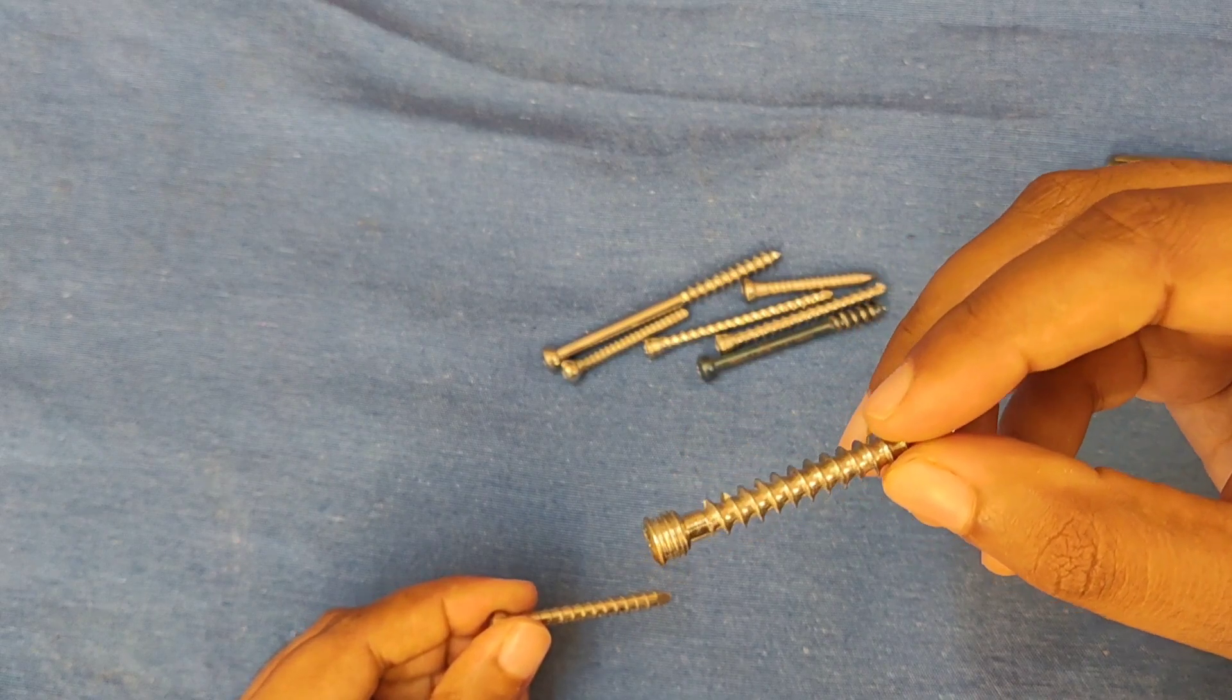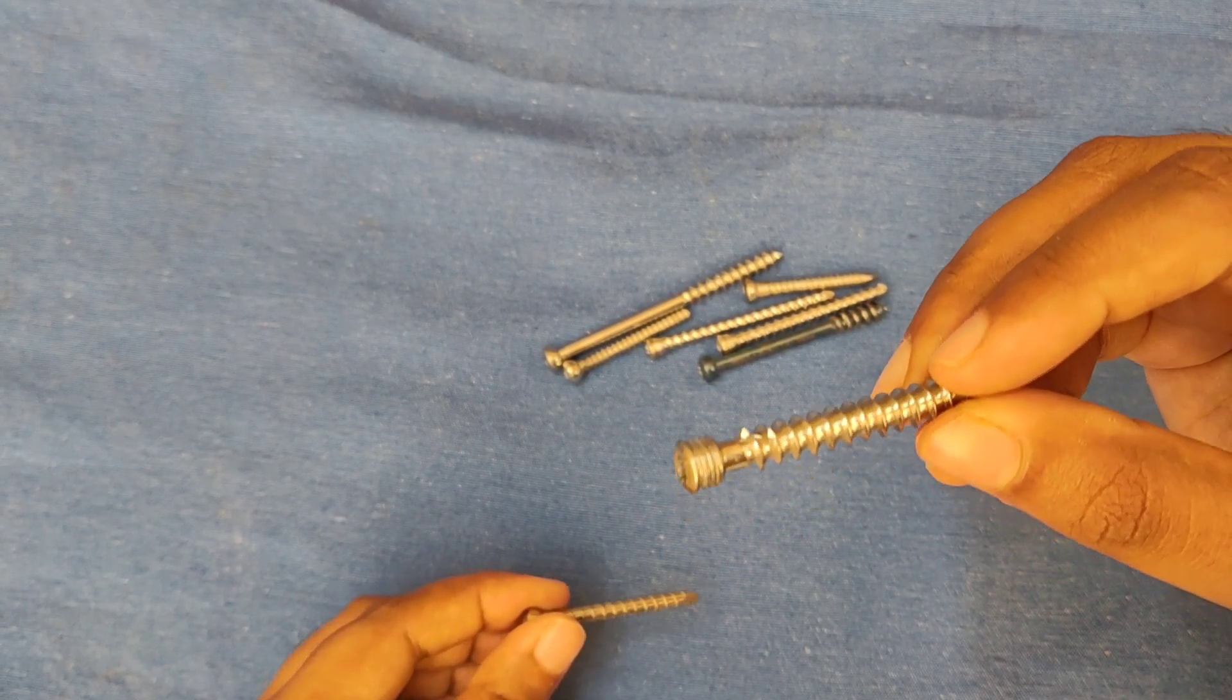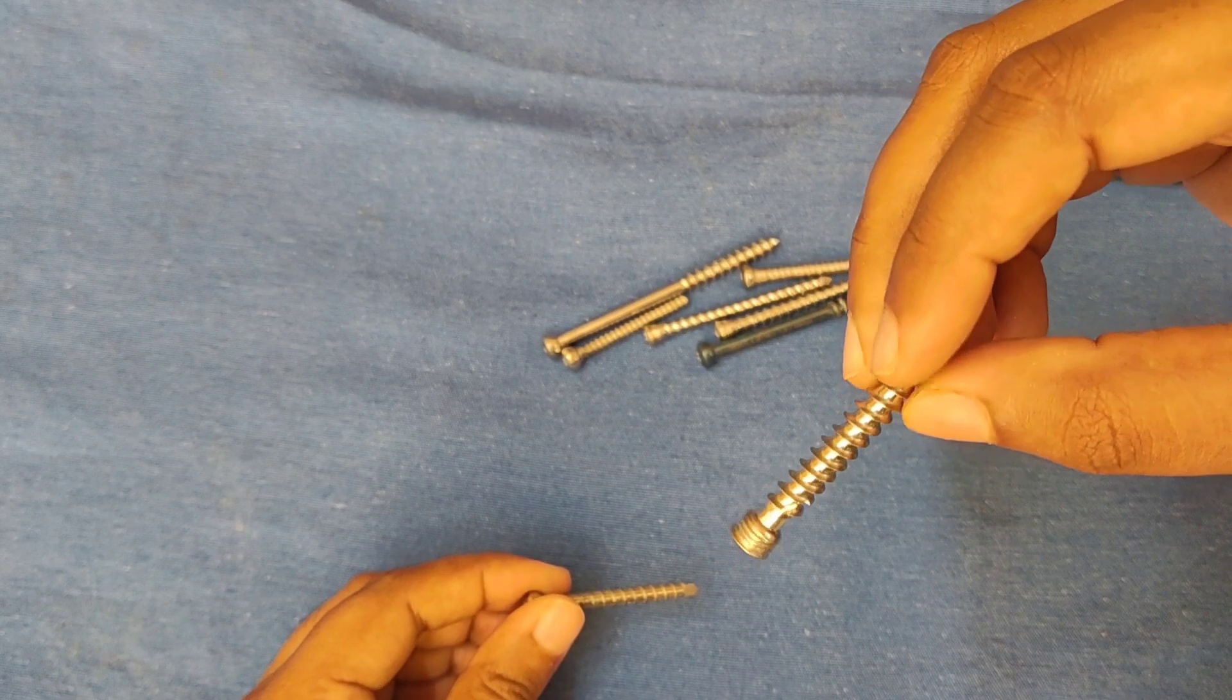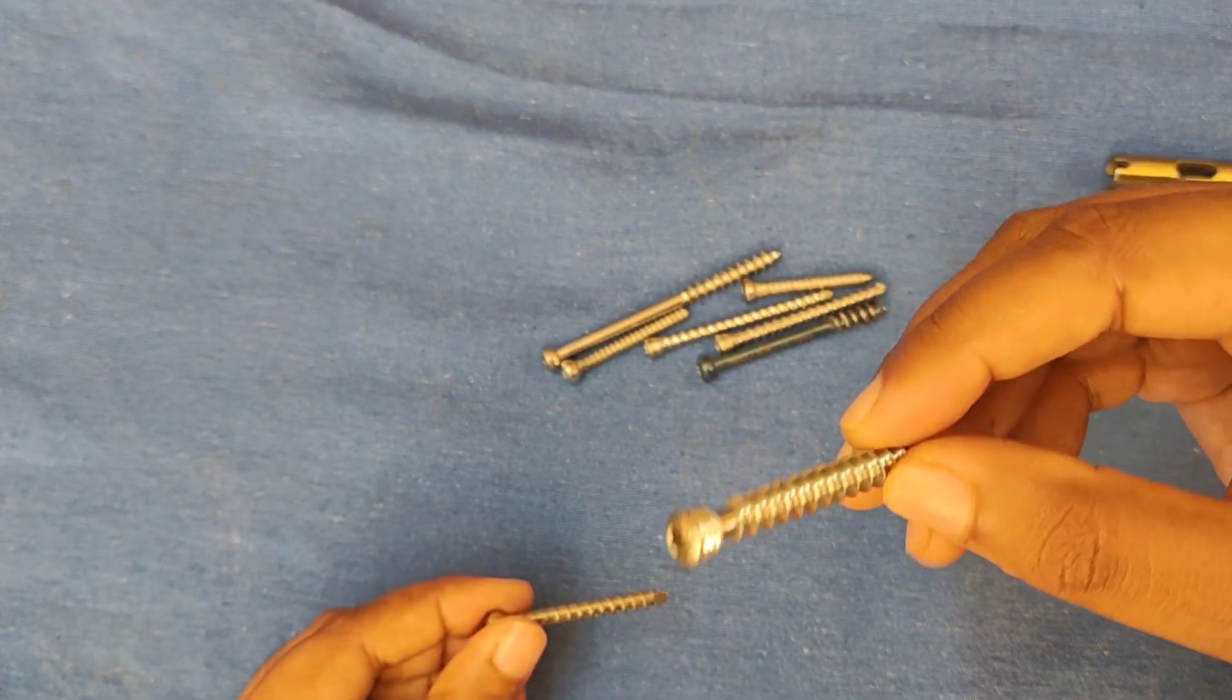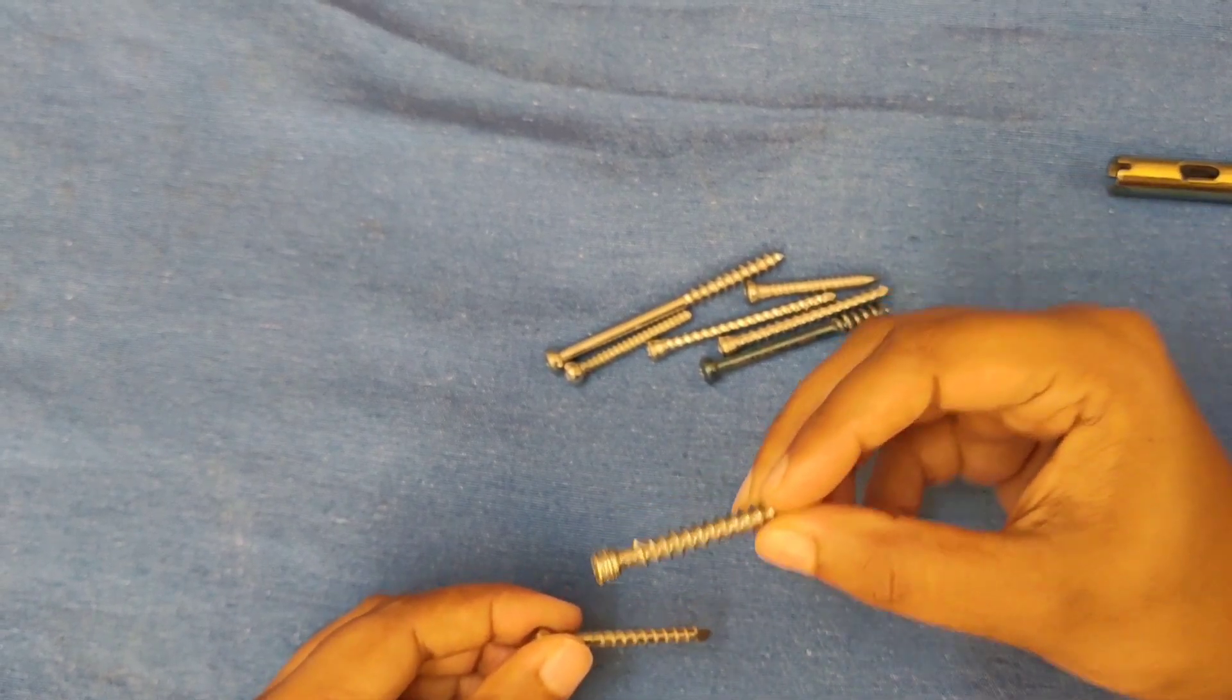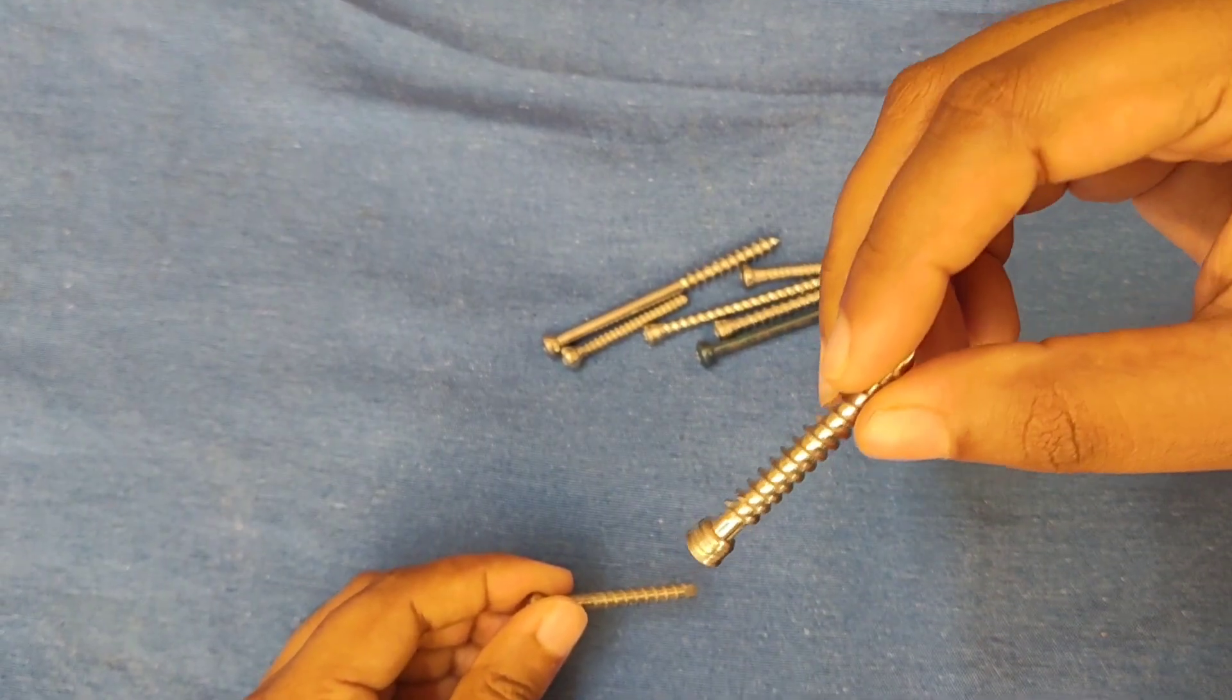Cortical screws are basically diaphyseal screws. They have less thread diameter, so the pull-out strength is very less. In case of good bone quality we can insert this screw safely. In case of osteoporotic bones and metaphyseal areas, we can use a cancellous screw where the thread diameter is more and it has good pull-out strength.